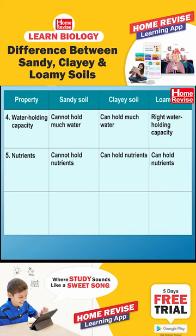Five: nutrients — sandy soil cannot hold nutrients, clay soil can hold nutrients, and loamy soil can also hold nutrients. Six: plowing — sandy soil is easy to plow, clay soil is difficult to plow, and loamy soil is easy to plow.